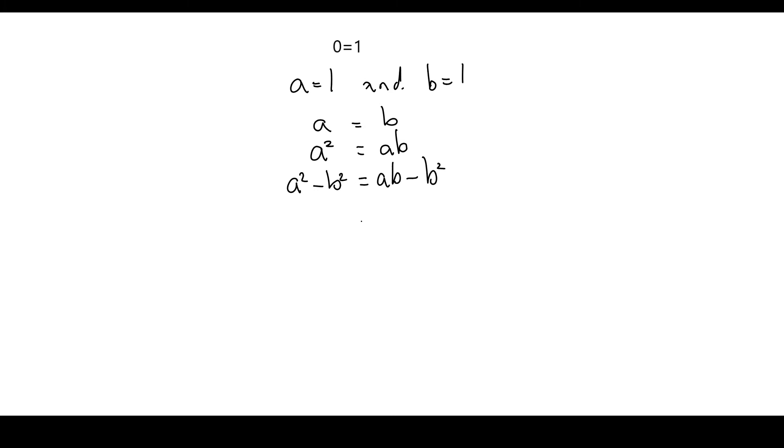I'm now going to factorize both sides. On this side we've got a difference of two squares, so that becomes A minus B and A plus B. On this side I can factorize out B, so I get B and I get A minus B.